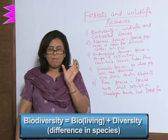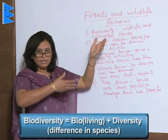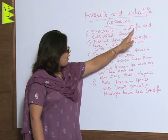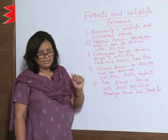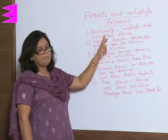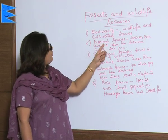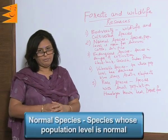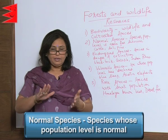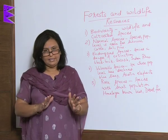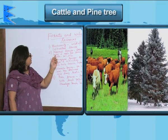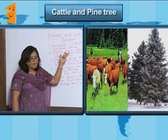Biodiversity: 'bio' means living, and 'diversity' means the difference in species. So biodiversity means the wildlife and cultivated species — everything to do with forest and wildlife constitutes biodiversity. Next, we have normal species — those species whose population level is normal, meaning it is neither too high nor too low but almost equivalent to what it should be. Examples include cattle, sal, and pine.